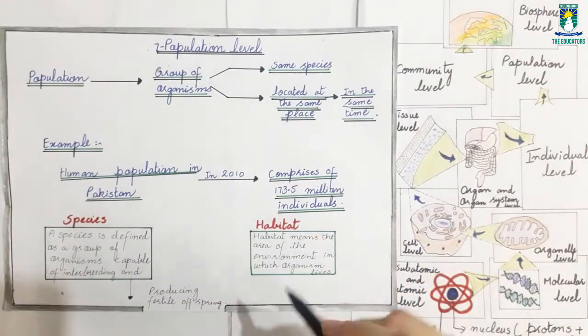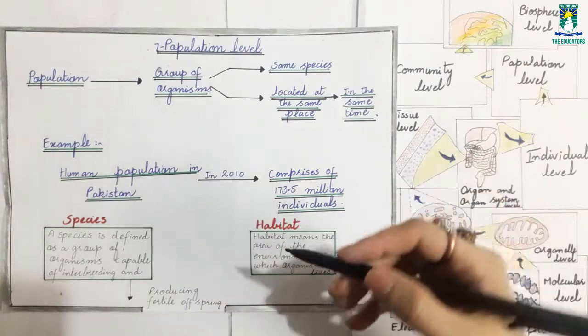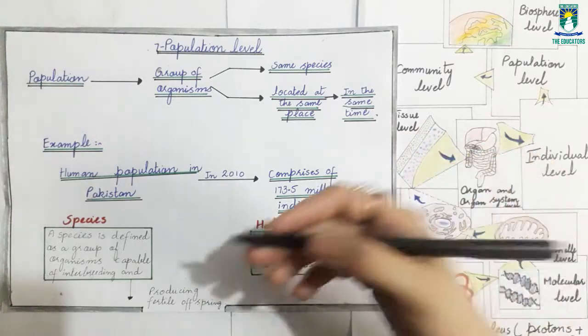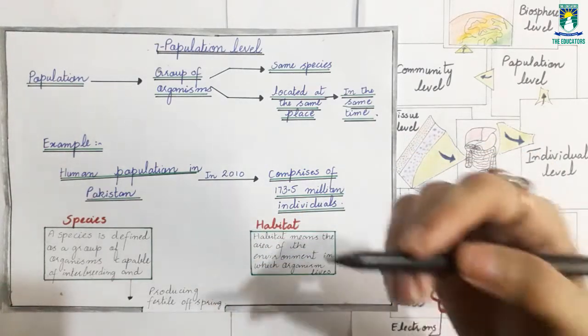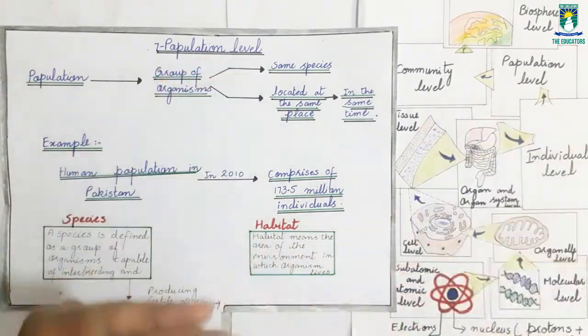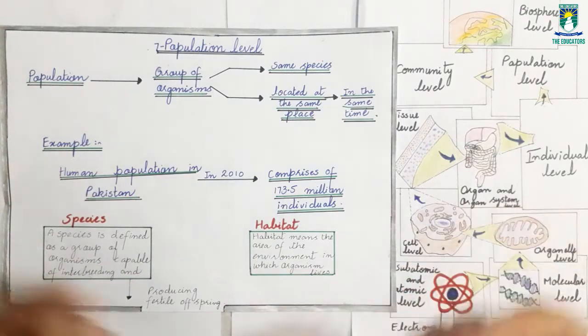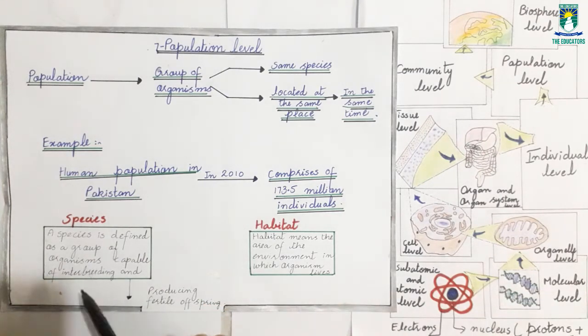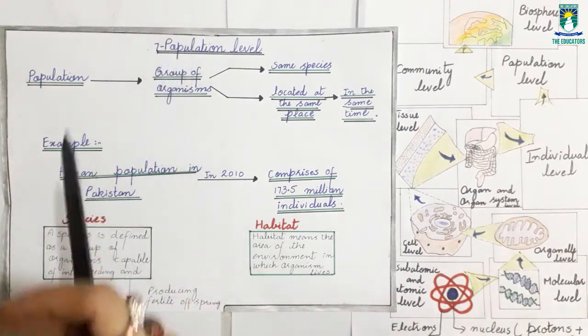Now we will discuss the population level. Biologists study interactions among members of the same species living in the same habitat. It means that the biologists study the same species which occupy the same habitat. They study their interactions. Now the question arises, what are species and what are habitat? A species is defined as a group of organisms capable of interbreeding and producing fertile offspring. It means a group of the same kind of organisms form the species.